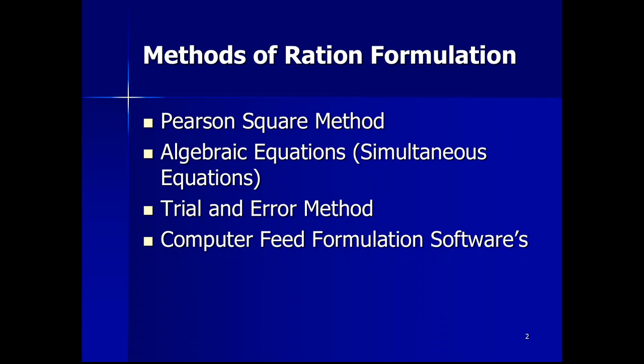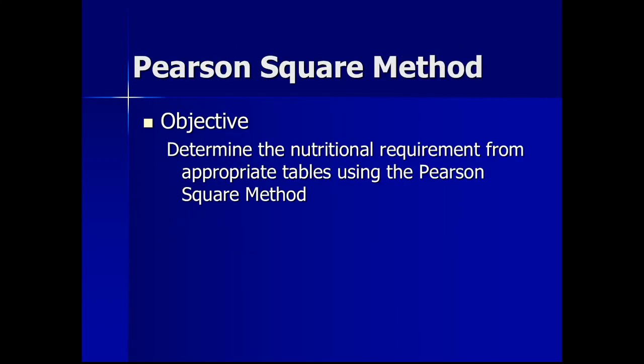There are four main methods commonly used for ration formulation: the Pearson square method, algebraic equation, trial and error, and computer feed formulation. In this lecture we will discuss only the Pearson square method. In the Pearson square method, we can only balance one nutrient at a time.